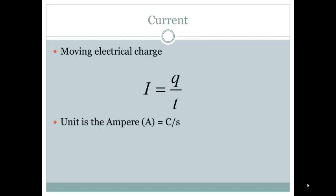In the equation that you see there, I equals Q over T. I is our variable for current. Q is, of course, charge, and T is time. So current equals Q, the amount of charge, divided by T, the time interval through which the charge passes a given point. Our unit for current is the ampere, or amp for short, and it's equal to coulombs per second.